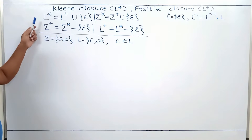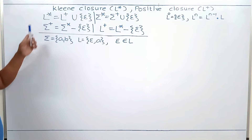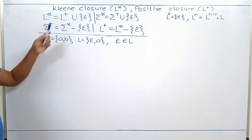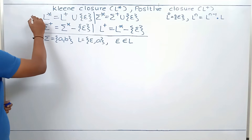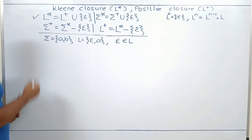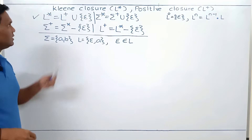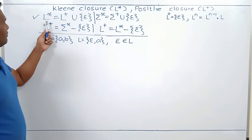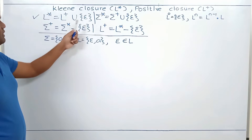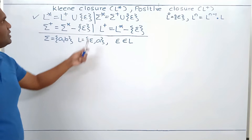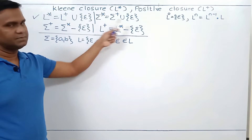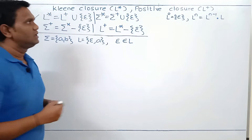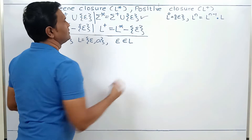When we studied power of language, we studied this equation: L* is L+ union epsilon. This equation is correct for every language. Equivalently, sigma* is equal to sigma+ union epsilon, and this equation is also correct.